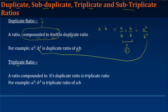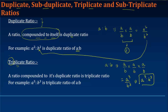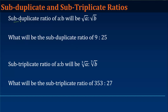Similarly, for the triplicate ratio — if I have a ratio a:b and I need to find the triplicate ratio, I multiply this ratio by itself three times. The relevance of 'tri' in triplicate is that we multiply three times, and what we get is a³/b³. This is the triplicate ratio of a:b.